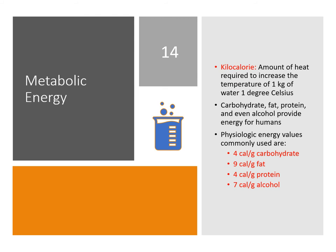Carbohydrates, fats, proteins, and alcohol all provide energy — these are our macronutrients. The physiological energy values are: 4 calories per gram for carbohydrates, 9 calories per gram for fat, 4 calories per gram for protein, and 7 calories per gram for alcohol. These physiologic energy values are important and could appear on board exams.